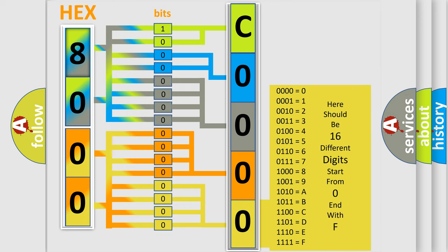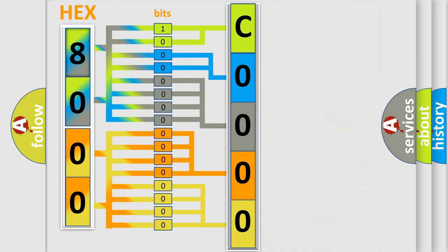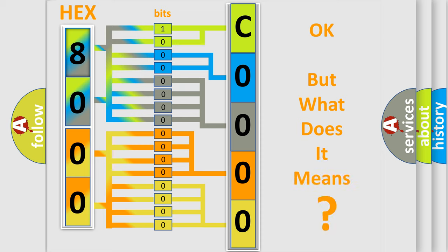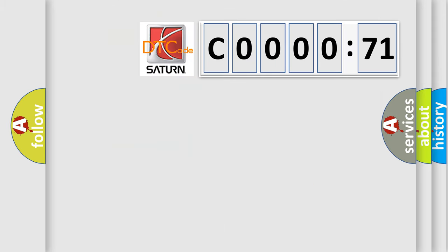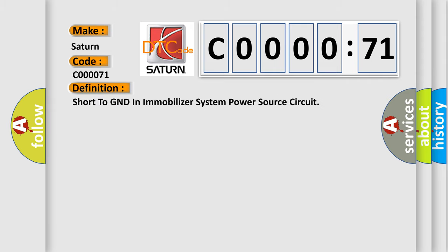We now know in what way the diagnostic tool translates the received information into a more comprehensible format. The number itself does not make sense to us if we cannot assign information about what it actually expresses. So, what does the Diagnostic Trouble Code C00071 interpret specifically for Saturn car manufacturers?